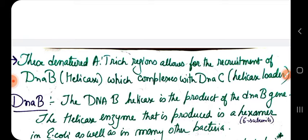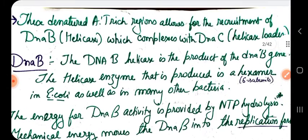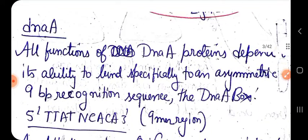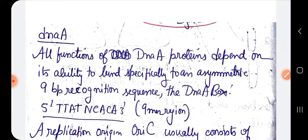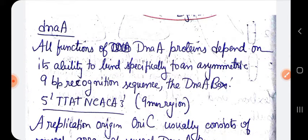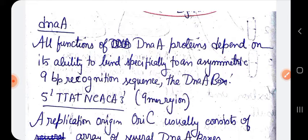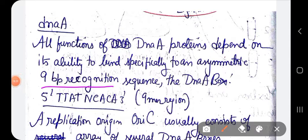All functions of DnaA protein depend on its ability to bind to an asymmetric nine base pair recognition sequence called the 9-mer or DnaA box. The first function of DnaA is to bind at these 9-mer regions. DnaA first binds to these 9-mer regions — this is the sequence of those 9-mer regions.